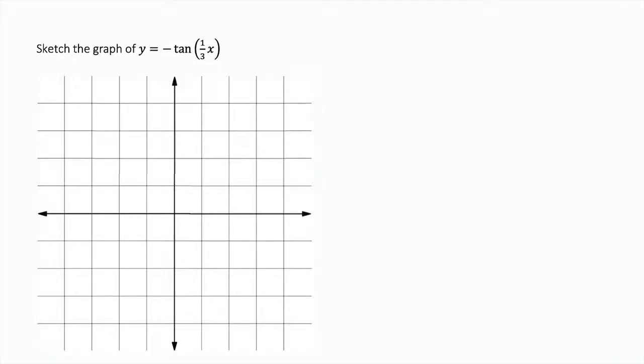Sketch the graph of y equals negative tangent of one-third x. For sketching the graph of tangent, we start by finding our asymptotes.